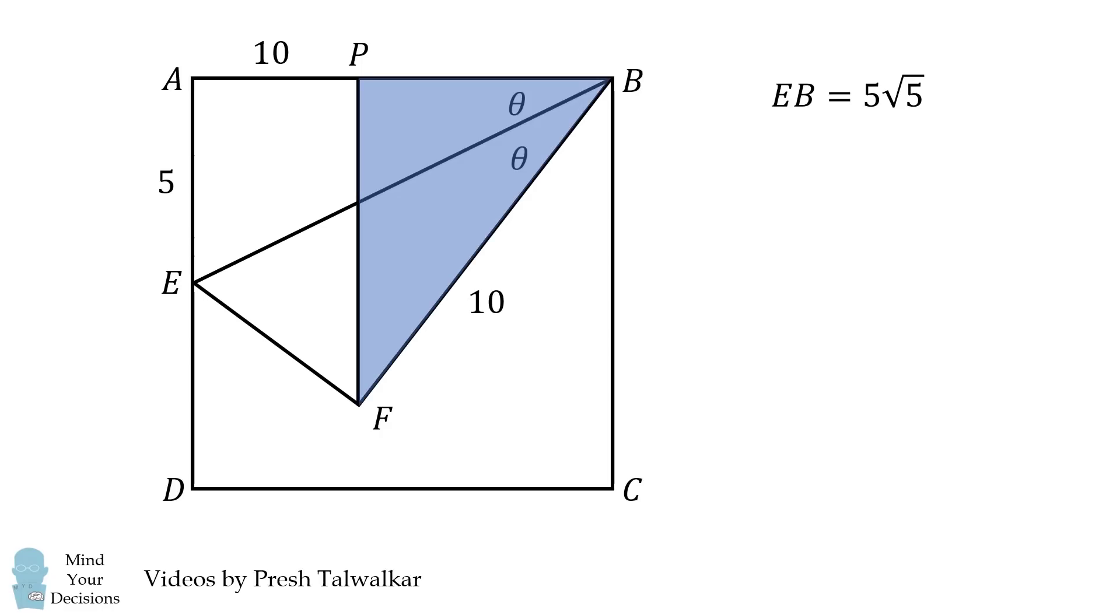Consider this triangle. The sine of 2 theta will be equal to FP divided by 10. We can then use the sine double angle formula. From here, we need to calculate the sine of theta and the cosine of theta.